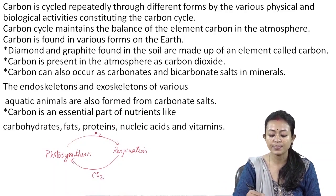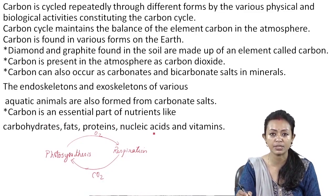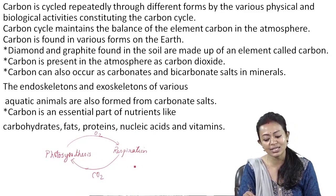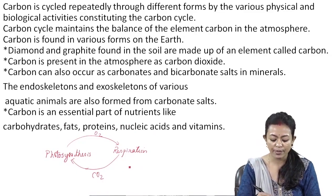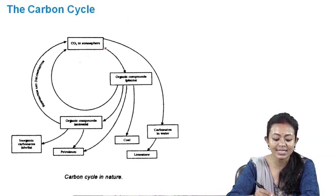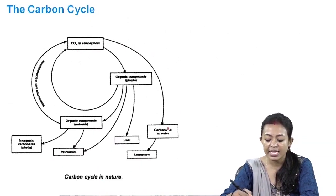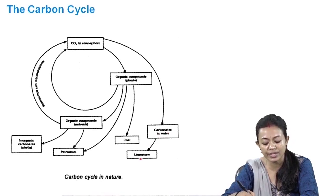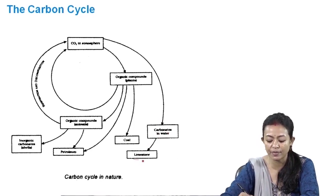Carbon is an essential part of nutrients like carbohydrates, fats, proteins, nucleic acids, and vitamins. This balance is perfectly maintained by photosynthesis and respiration. The carbon dioxide in the atmosphere gets dissolved in the form of carbonates in water, and this tends to result in the formation of limestone.